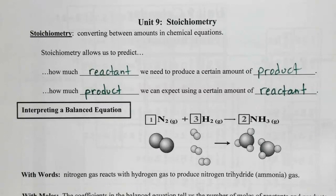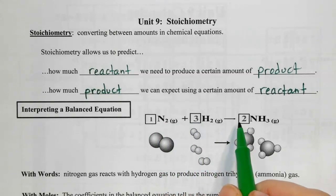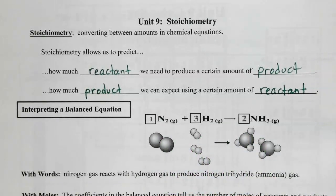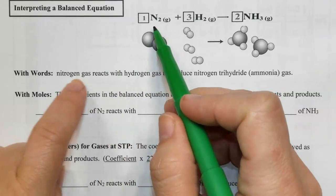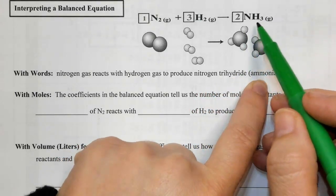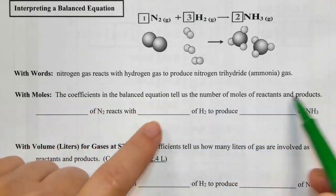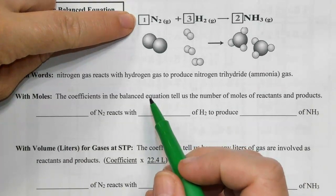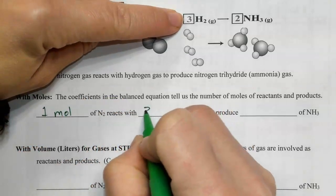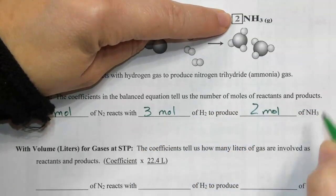When you interpret a balanced equation, we have the coefficients — for example, in this reaction, 1, 3, and 2. There are several things we know about the amounts of these reactants and products based on the coefficients. With words, we would read this as nitrogen gas reacts with hydrogen gas to produce nitrogen trihydride, also known as ammonia gas. With moles, the coefficients in the balanced equation tell us the number of moles of reactants and products. Because there's a coefficient of 1 here, there is 1 mole of nitrogen which reacts with 3 moles of hydrogen to produce 2 moles of ammonia.